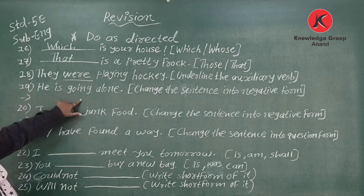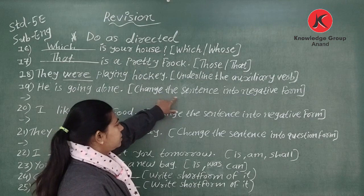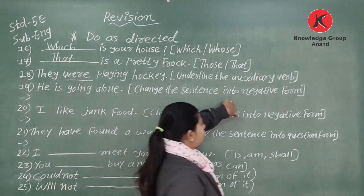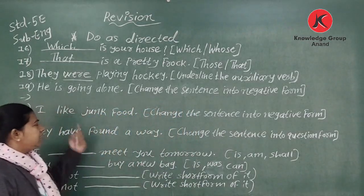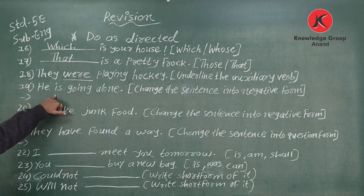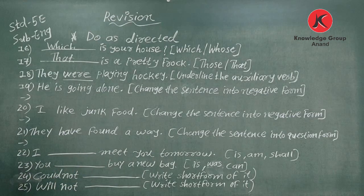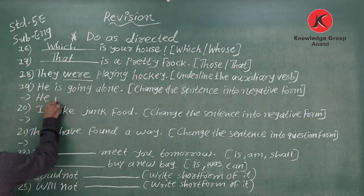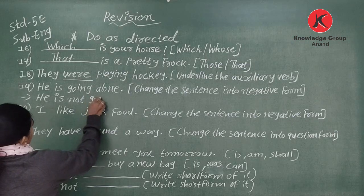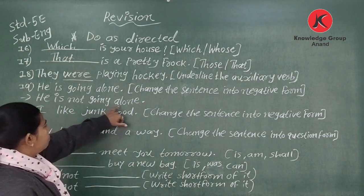Number nineteen: 'He is going alone.' Change the sentence into negative form. We have to add only 'not.' So the answer is: 'He is not going alone' — A-L-O-N-E.